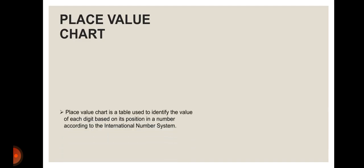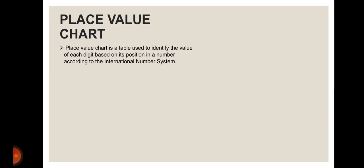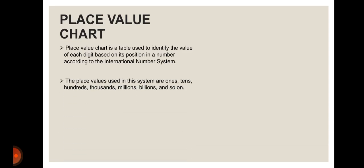We are looking at the international place value system. The place value chart is a table used to identify the value of each digit based on its position in a number, according to the international number system. The place values used are ones, tens, hundreds, thousands, millions, and so on. It follows the three-to-three-to-three system of comma placement.